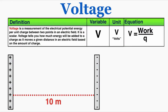Voltage tells you how much energy will be added to a charge as it moves a given distance in an electric field, based on the amount of charge. Potential energy in general tells you how much energy something will gain as it moves through a field — like gravitational potential energy tells you how much energy an object will gain by falling through a gravitational field. In the same way, voltage tells you the electrical potential energy something will gain in an electric field, but it's the potential energy per unit of charge.